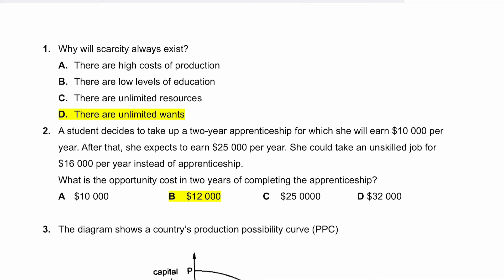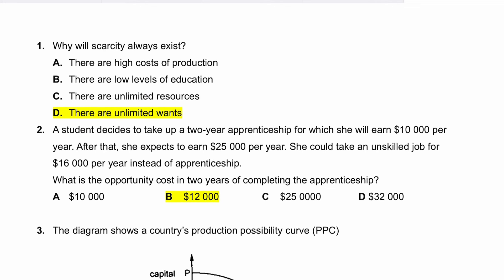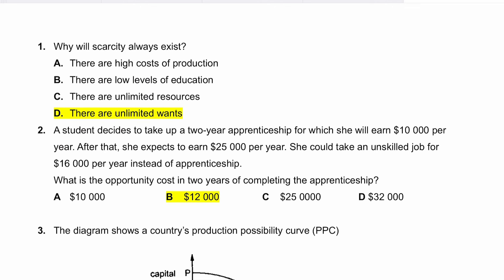Question two: she will earn $10,000 per year during the apprenticeship. After that, she expects $25,000 per year. She could take an unskilled job for $16,000 per year instead. What is the opportunity cost over two years of completing the whole program? If she joins the apprenticeship, she earns $10,000 per year, so $20,000 over two years.